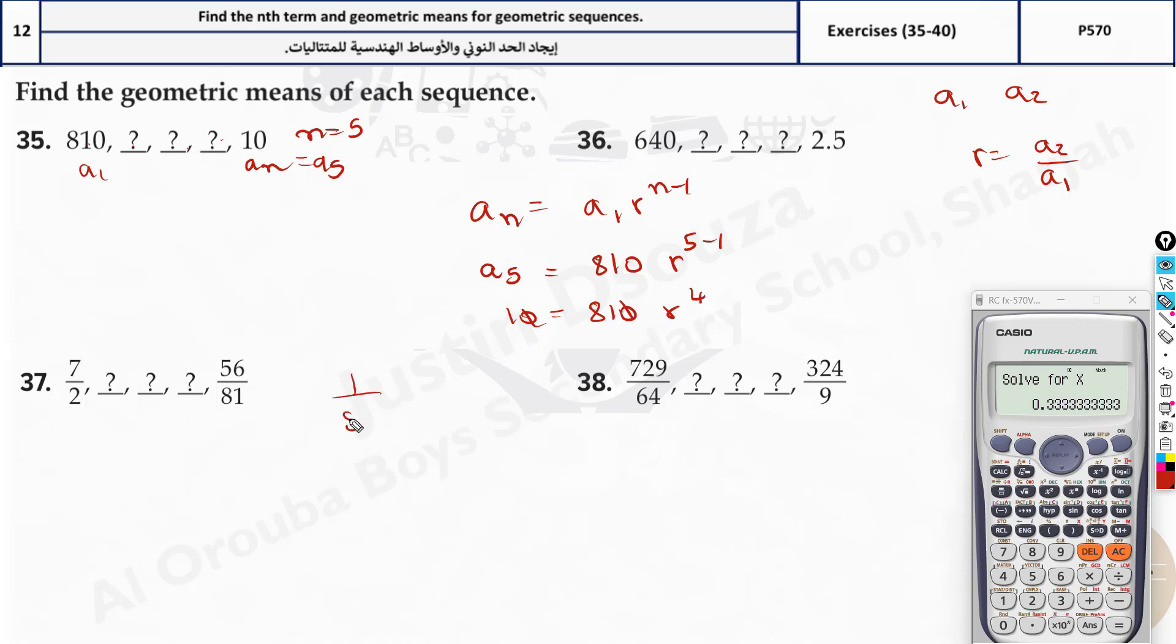Take 81 to the other side, it will be 1 divided by 81 equals r to the power 4. Take radical 4 on both the sides. So we have shift and this symbol, use your radical, it's 4, and press next, it's 1 divided by 81. You know, 3 to the power 4 is 81. So it should be 1 by 3 itself. So that's the answer.